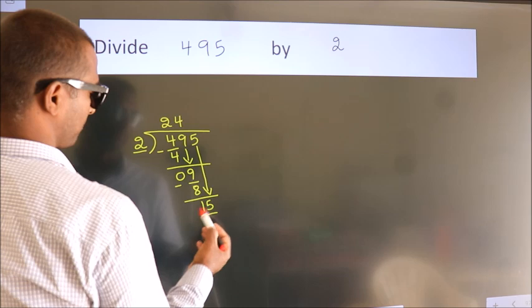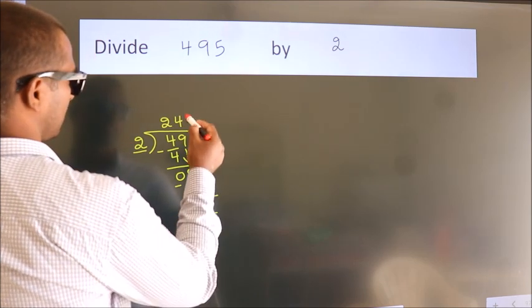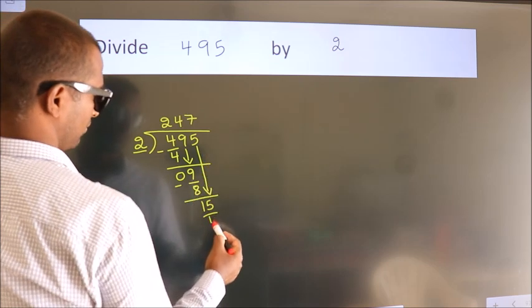So 15. A number close to 15 in 2 table is 2 times 7, 14.